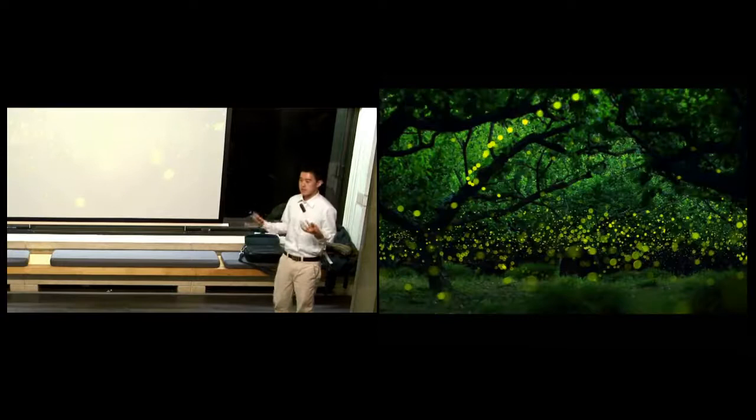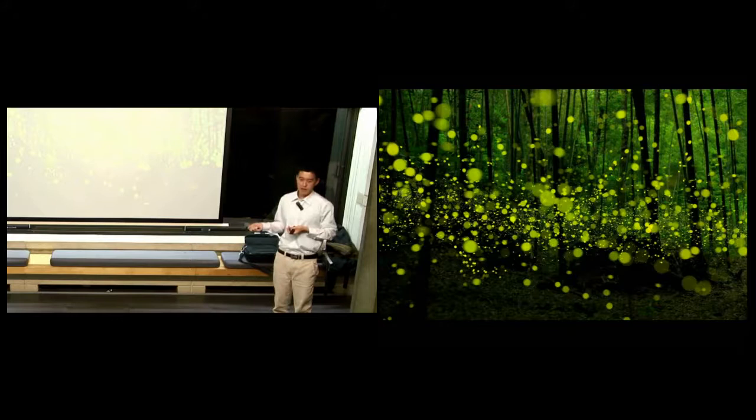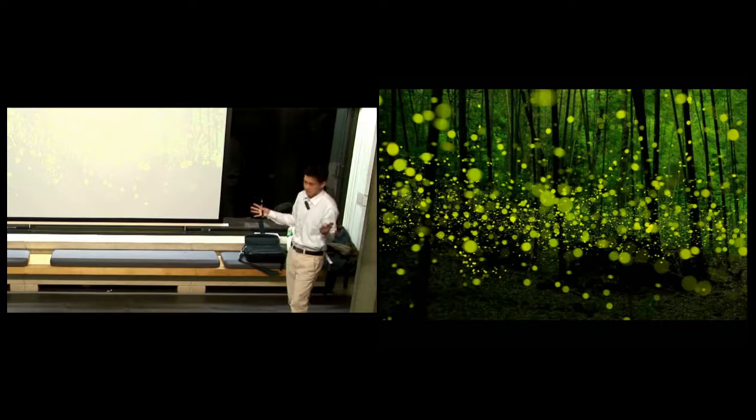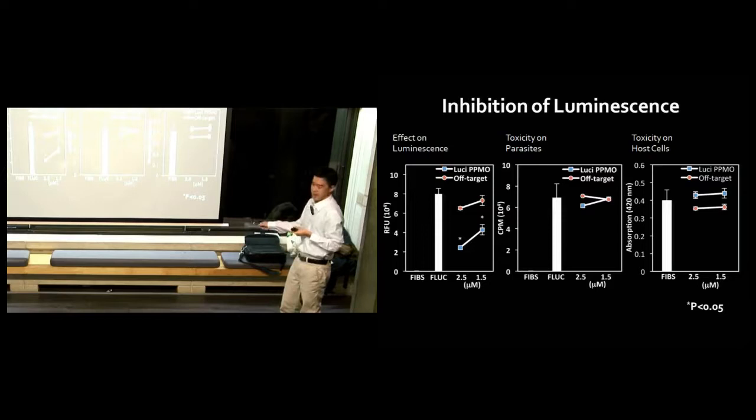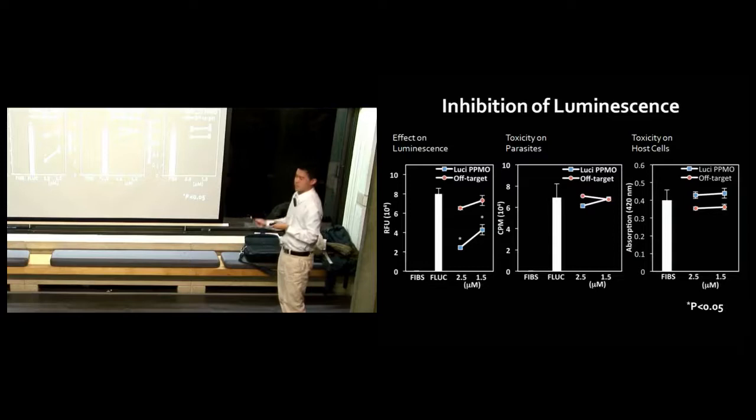How do we create luminescent parasites? We took the gene responsible for luminescence in fireflies and stuck it into parasites. The take-home message from this slide is that you see a diminishing amount of luminescence and it has no toxicity on parasites and no toxicity on the host cells. Remember, we're not killing the parasites at this point. There should be no toxicity. We're just reducing luminescence in the parasites.